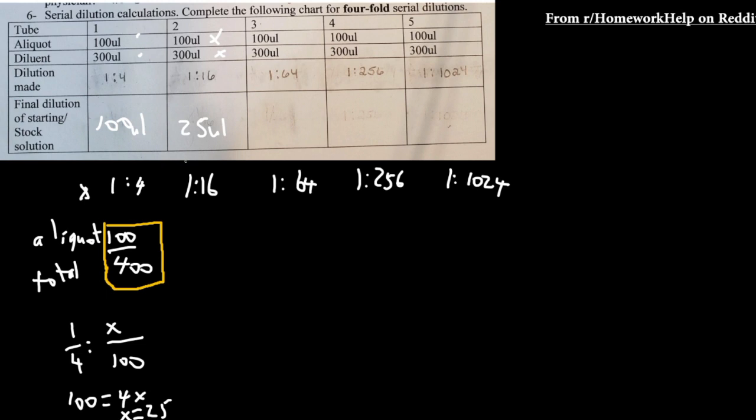So now that we've determined that in test tube 2, you have a ratio of 25 over 400. When you divide this, you're going to get the ratio of 1 to 16.